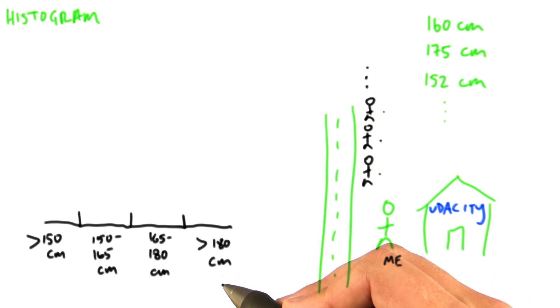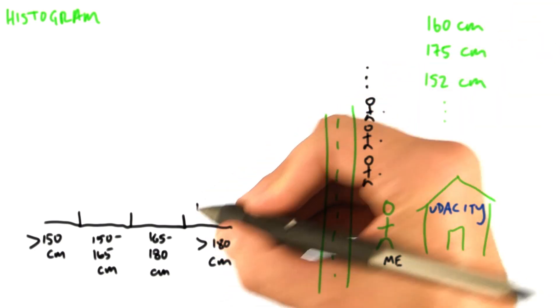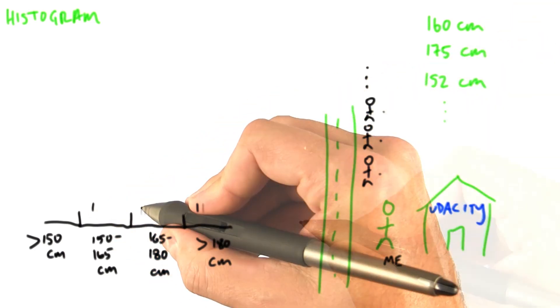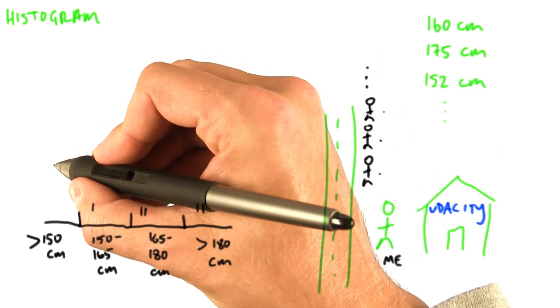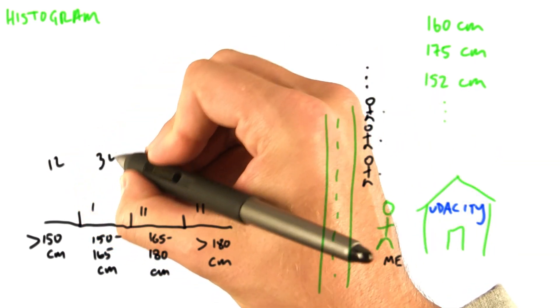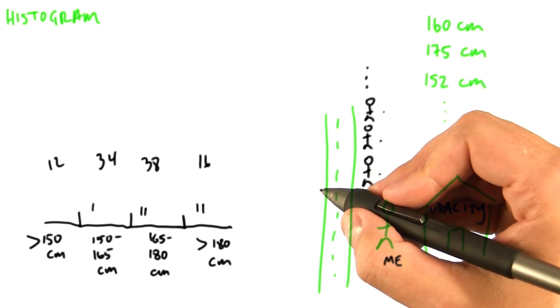Then I'll place each measurement into its bin. So, every time someone walks by, I place another tick mark into the bin. Here, for instance, we might end up with the measurements 12, 34, 38, 16 out of 100 people.